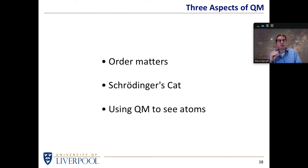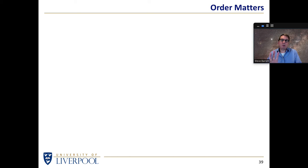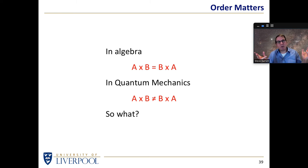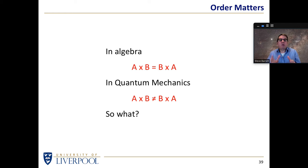Let me describe three aspects of quantum mechanics that bring home some of the weirdness of what the world is like on the scale of the very, very small: order matters; Schrödinger's cat; and actually seeing atoms. With 'order matters' — there's a fundamental part of quantum mechanics that tells us order makes a difference. In algebra, A times B is the same as B times A — two times three is the same as three times two. But in the mathematics of quantum mechanics, the order in which you do things does matter, and that mirrors the order in which you make a measurement.